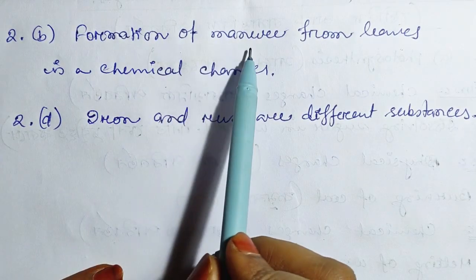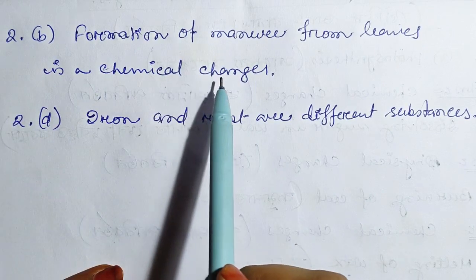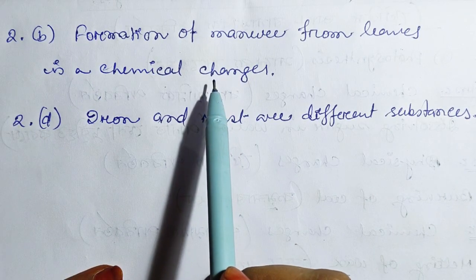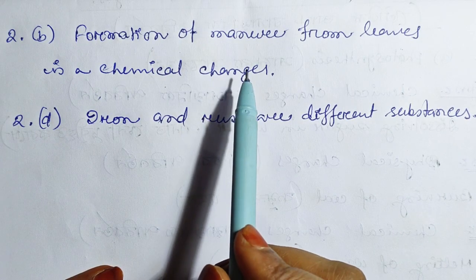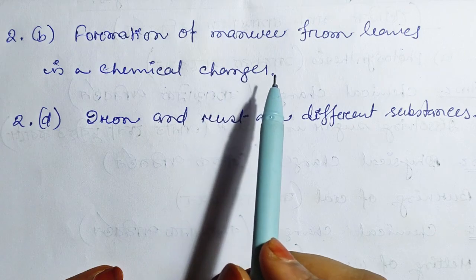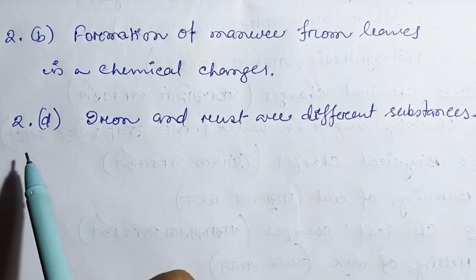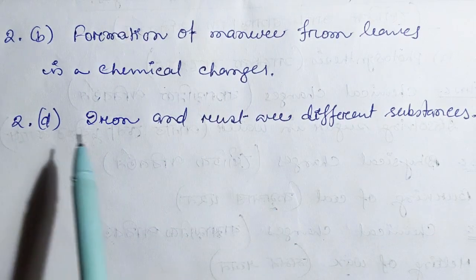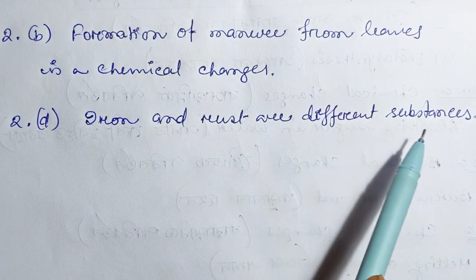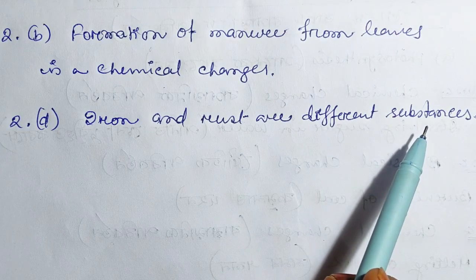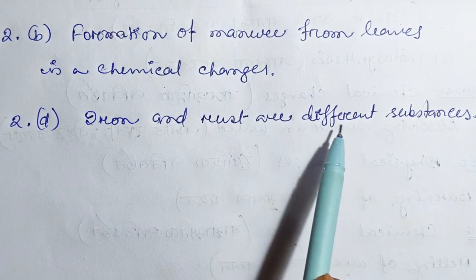Formation of manure from leaves is a chemical change. Iron and rust are different substances.